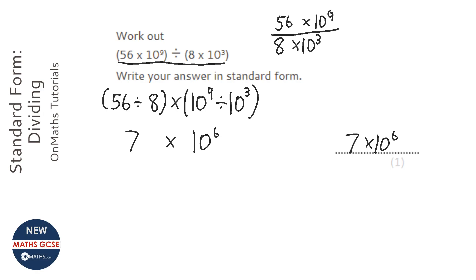And you can split up that fraction, so you could make it 56 over 8 times 10 to the power of 9 over 10 to the power of 3, and that's essentially what we've done to answer this question.